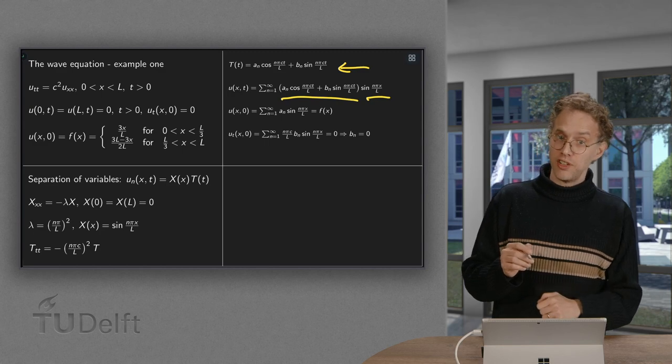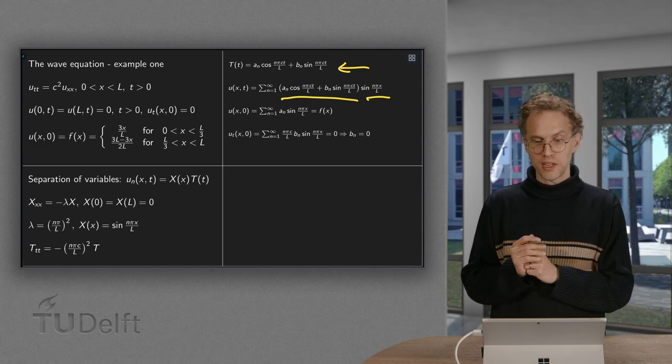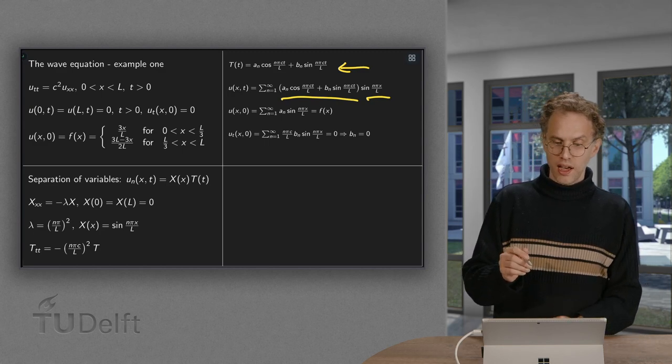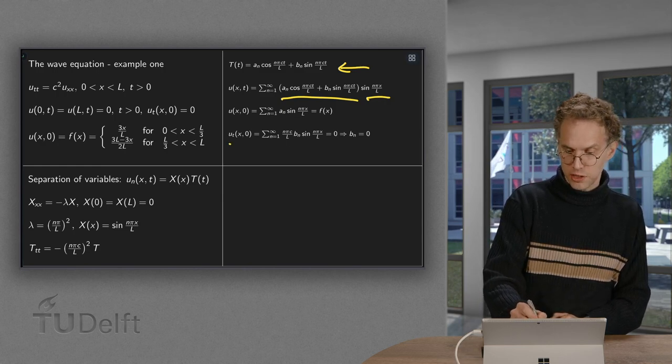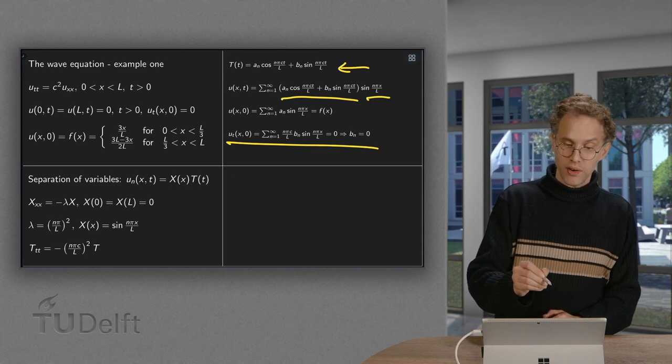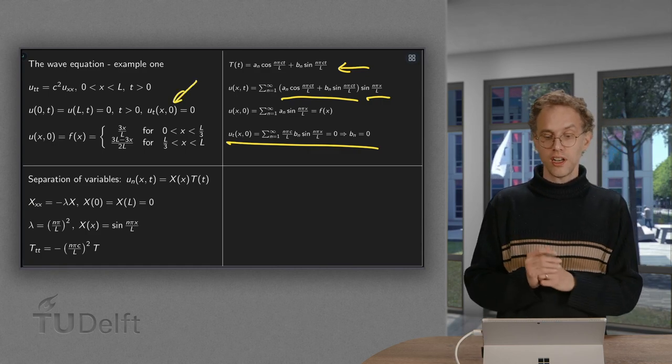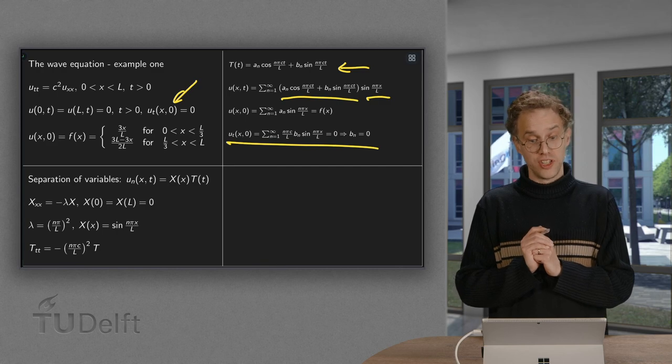So for the bn, it's actually easy. We differentiate with respect to time and plug in t equals zero. We get this expression over here. But our initial condition says this is zero. So that means that our bn are zero.